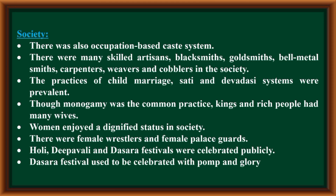Society: There was an occupation-based caste system. There were many skilled artisans — blacksmiths, goldsmiths, bell metal smiths, carpenters, weavers, and cobblers in society. The practices of child marriage, sati, and the devadasi system were prevalent. Though monogamy was the common practice, kings and rich people had many wives. Women enjoyed a dignified status in society. There were female wrestlers and female palace guards. Festivals like Deepavali and Dasara were celebrated publicly with pomp and glory.